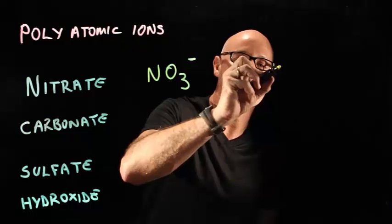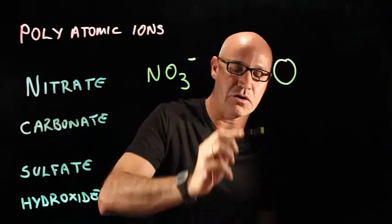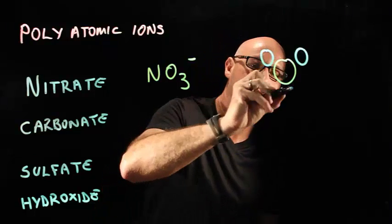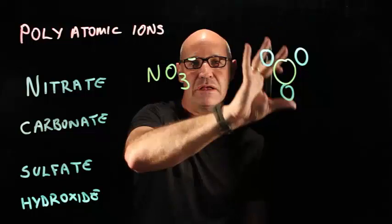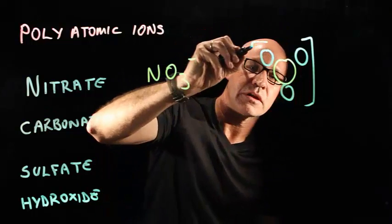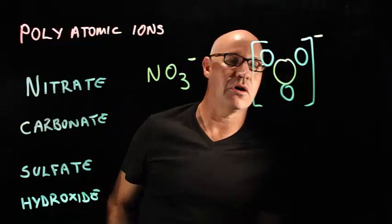So what it would look like is that you've got one nitrogen and then you've got three oxygens around it. So that would be the molecule. And the whole molecule has an overall charge of one minus.